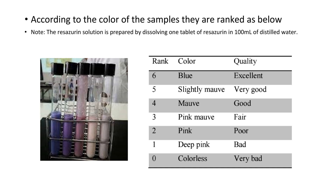According to the color of the samples, they are ranked as below. If we can observe blue color, that means it is excellent quality. If you observe color loss, that means it is a very bad sample. In between them, you may observe slight pink, mauve pink, and deep pink colors. According to that, you can determine the quality of the raw milk.